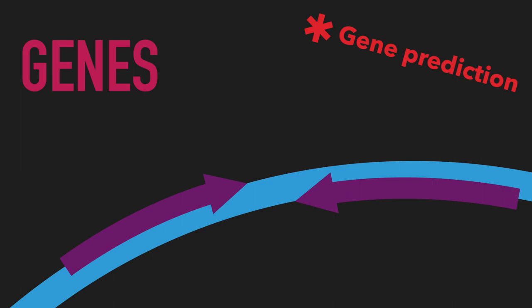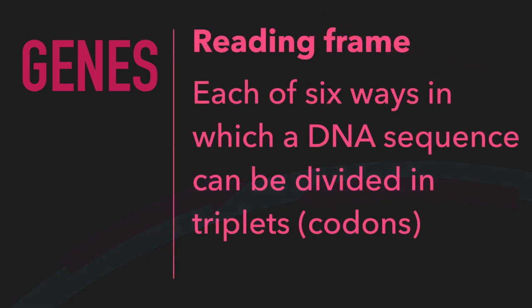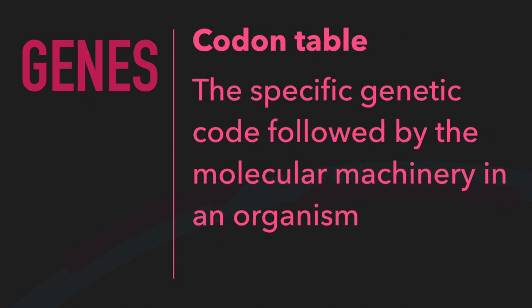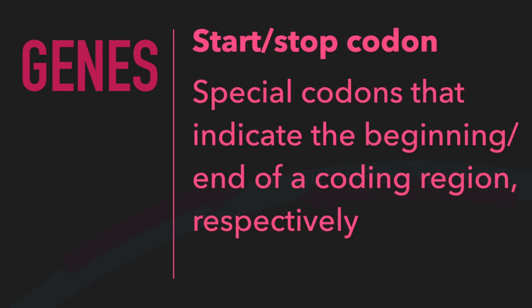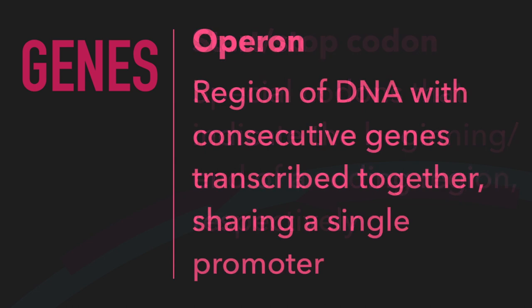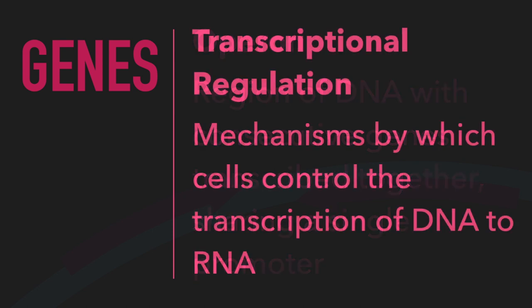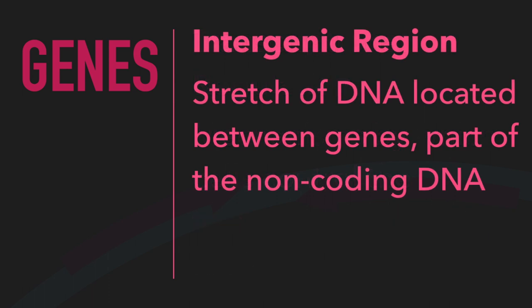Most of you are likely very familiar with these concepts, at least in some model organism. Therefore, I'll quickly go through a few concepts just to refresh terminology. Reading frame: each of the six ways in which a DNA sequence can be divided in triplets, or codons. Codon table: the specific genetic code followed by the molecular machinery in an organism. Start and stop codon: special codons that indicate the beginning and end of a coding region, respectively. Operon: region of DNA with consecutive genes transcribed together, sharing a single promoter. Transcriptional regulation: mechanisms by which cells control the transcription of DNA to RNA. Intergenic region: stretch of DNA located between genes, part of the non-coding DNA.